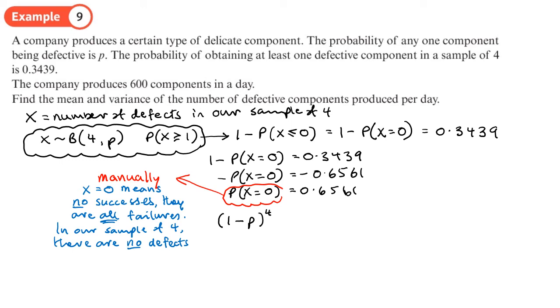Remember, the manual way of doing it would be nCr times by, we've got our failures and successes, where we have r successes and n minus r failures. So in this case, r would be zero. And n would be four, because that's our sample size. So that's where this one minus p to the power of four came from. So it came from basically this formula here. If you put r equal to zero, no successes, and n is four, a sample of four, it becomes basically four C zero times by p to the power of zero times by one minus p to the power of four or four minus zero. So that's where that comes from.